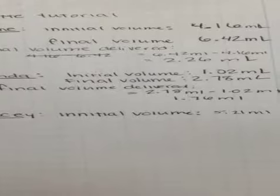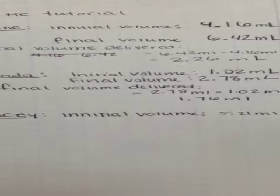Now you read it at the bottom of the meniscus. At the bottom of the meniscus it is at 5.21. The initial volume is 5.21 milliliters.